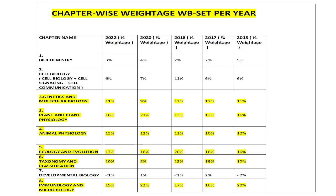Moving to the chapter-wise weightage of WB SET per year on a comparative basis, the major area has been immunology and microbiology — 19% in 2022, 22% in 2020, which is probably the highest percentage from a single area in a single year. You should mark up this unit as thoroughly as possible because a huge number of questions come from here each year. With my experience, I am sure that in 2023, immunology and microbiology would again be at the top. In 2018 it was 17%, in 2017 it was 16%, and in 2015 it was 20% again.